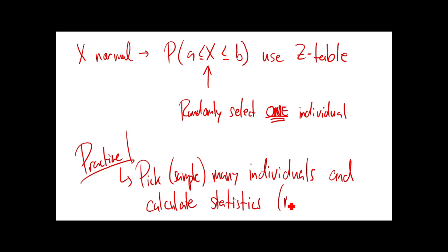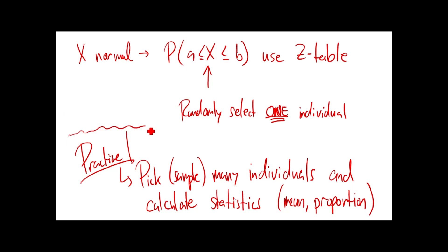So what we're normally going to do is pick a lot of individuals and calculate statistics about them - things like a mean or a proportion. I could calculate the average salary of CBC students, or I could calculate what percent of CBC students plan to vote in the upcoming election. A single number that says something about the population. What I want to know is: if you're going to go out and collect a bunch of data and calculate statistics, how does that statistic - the number itself, the average - behave?